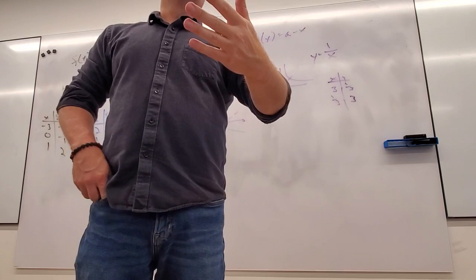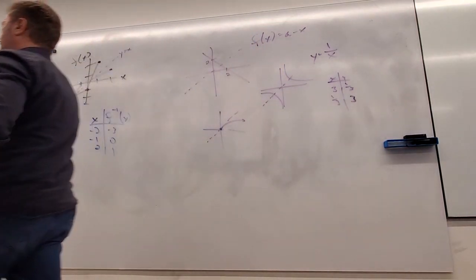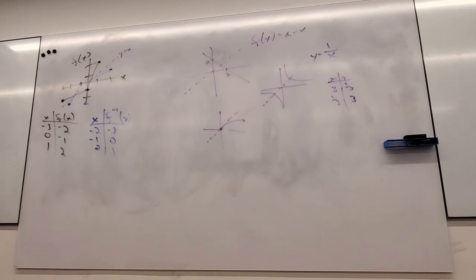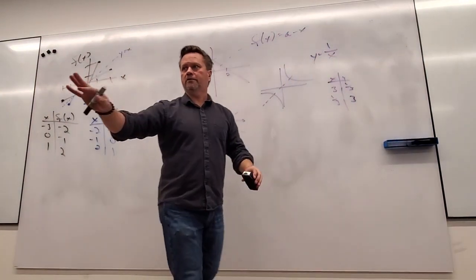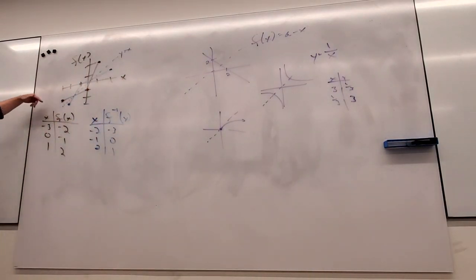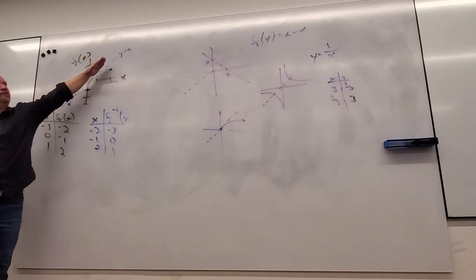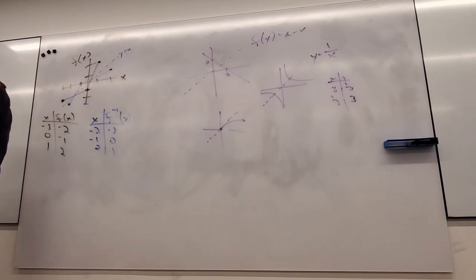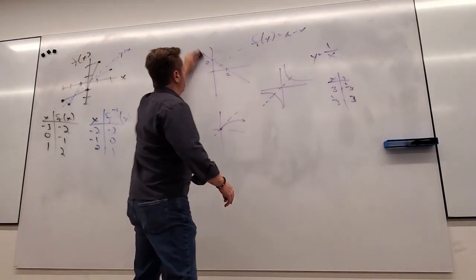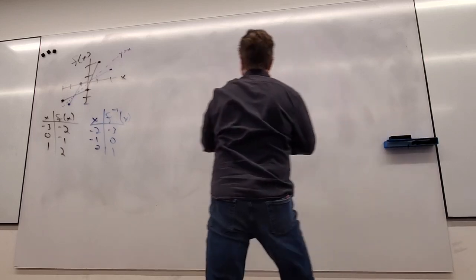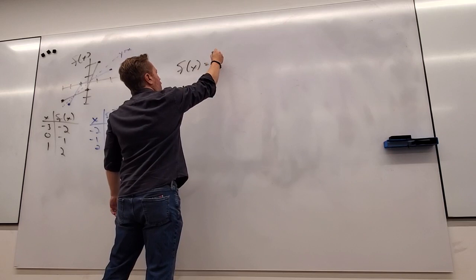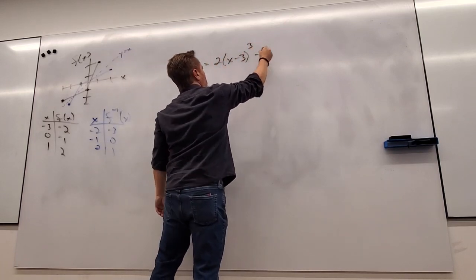Generally, finding an inverse graphically: you collect the points the function goes through, flip them, and re-graph. You can visually check it makes sense because it reflects around the y equals x line. So what if I give you the function not as a graph but as an equation? Let's do one that's kind of involved.